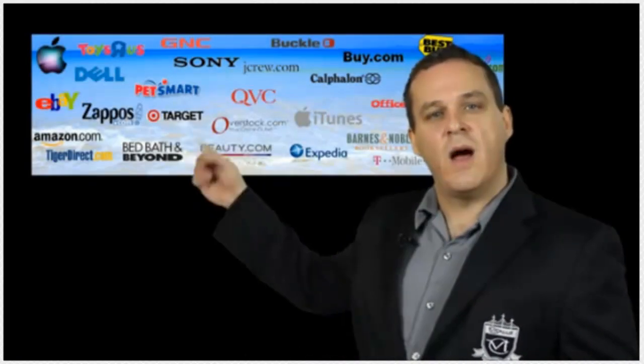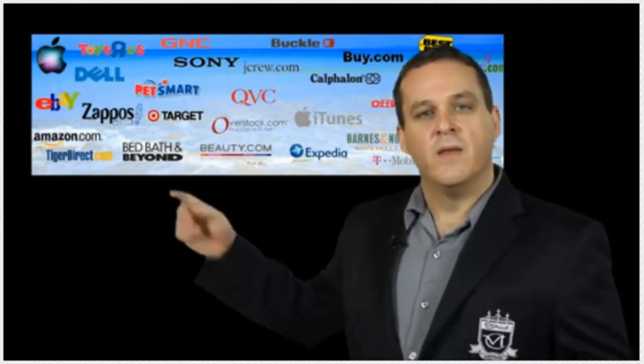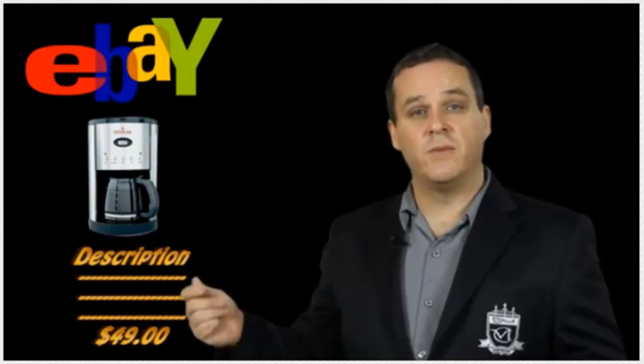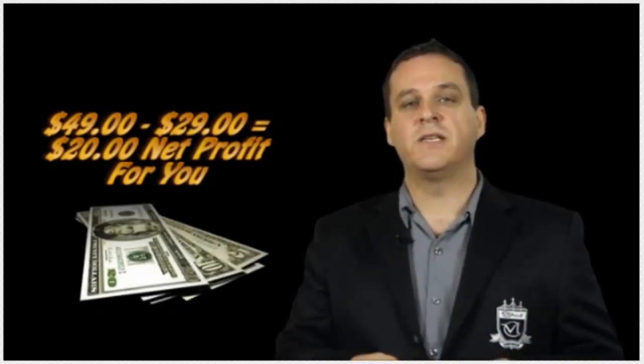...is you have suppliers online that are willing to supply the product. You don't pre-buy the product. You just simply take their image, their description, and you put it on eBay for a higher price. When the customer pays you the money, then you go ahead and take that money, you go back to the supplier, you purchase the item, and you ship it direct to the supplier, keeping the change for you. Imagine that.